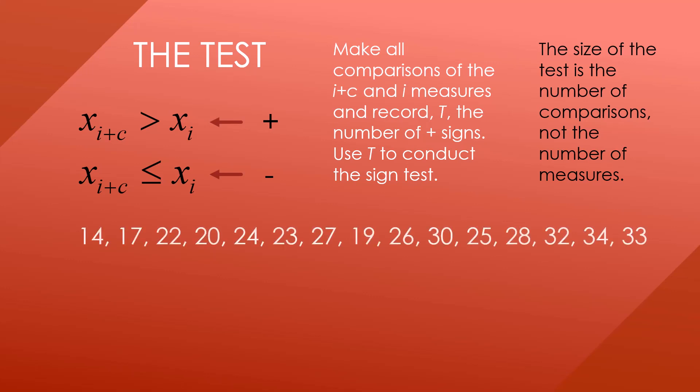So let's try this with the data we looked at before. Remember that we calculated C to be 8. So first we are going to have X sub 1 plus 8 or X sub 9, meaning the 9th value, and we are going to compare it to the first value, X sub 1. So we are going to compare 26 to 14. If 26 is greater than 14, which obviously it is, then we give it a plus sign. We are now going to compare X sub 2 plus 8 or X sub 10 to X sub 2, so the 10th value to the second value, and then the 11th value to the third value, and so forth, all the way until we are at the end. And if we do that, what we're going to find is of the seven comparisons, seven of them are plus signs.